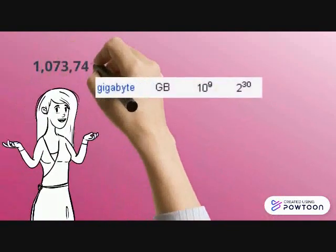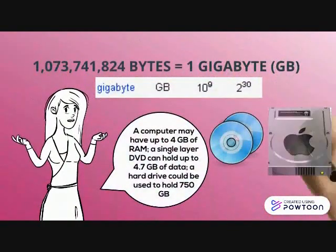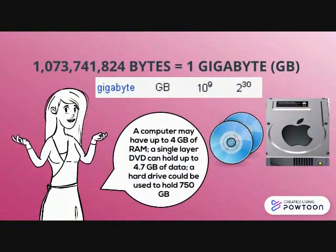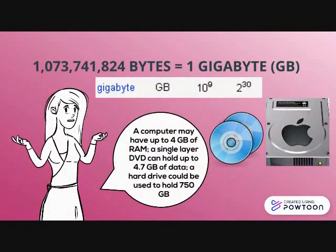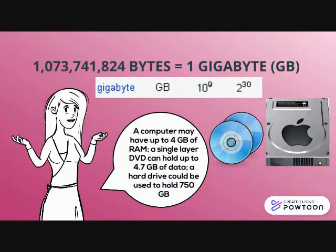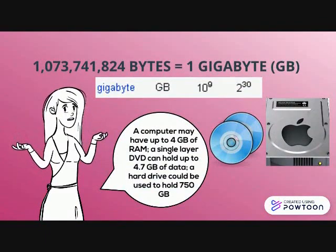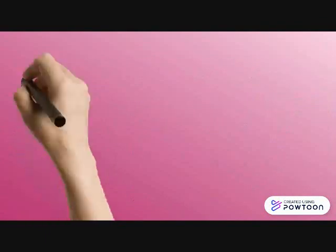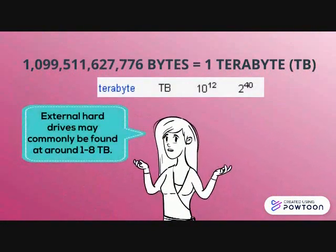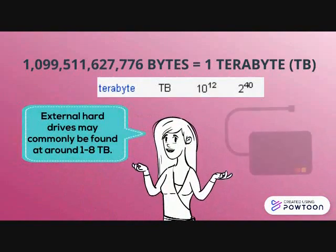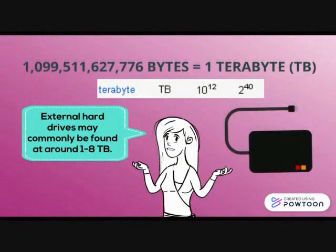Then, 1 GB is equal to over 1 billion bytes. A computer may have up to 4 GB of RAM. A single-layer DVD can hold up to 4.7 GB of data. A hard drive could be used to hold 750 GB. But the most exciting is 1 TB — it consists of over 1 trillion bytes. External hard drives may commonly be found at around 1 to 8 TB.